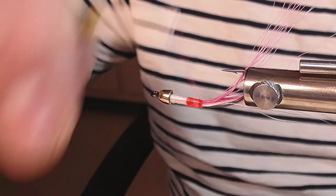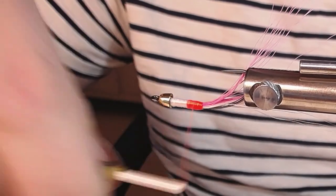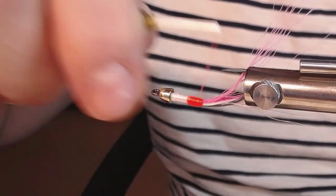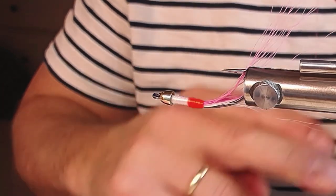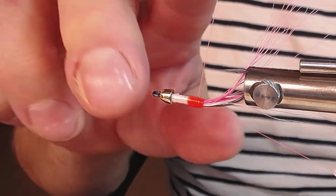Now I put on some gills. This is fluorescent orange-red thread. Just make sure that it's solid and do a hand whip finish there as well.